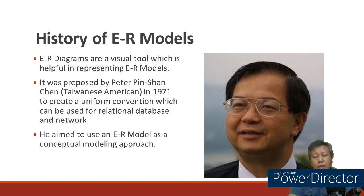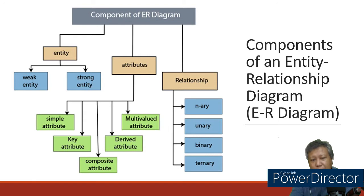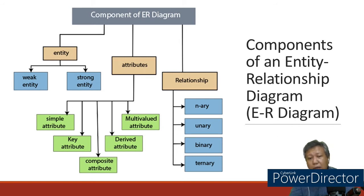So what are the components of an entity relationship diagram notation? We need notation or drawing for entities — for weak entities and strong entities. Then for attributes, how do we represent them? Attributes can be simple, primary key, composite, derived, or multi-valued. And we also need to show relationships — whether they are unary, binary, or ternary. Unary is one, binary is two relationships, ternary is three, and n-ary is four or more relationships.